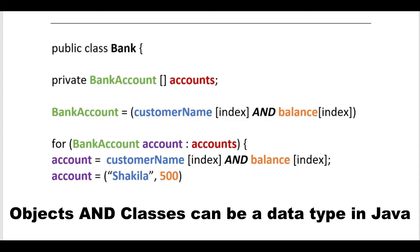The key takeaway is really understanding this graphic. When we create that private bank account accounts, bank account is a data type but this data type consists of the customer name at the index and the balance at the index. That means when we used our enhanced for loop, we didn't need to call a string or double - because accounts is really made up of two separate types. I color coded the graphic so you could see where these variables are being created, stored, and how they're all wrapped up together.